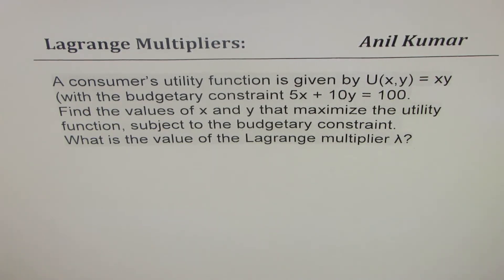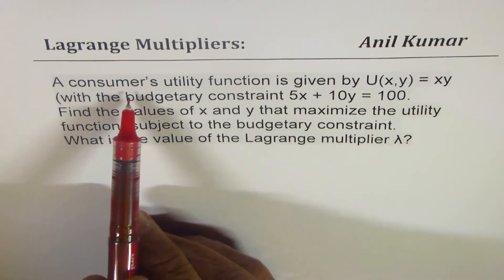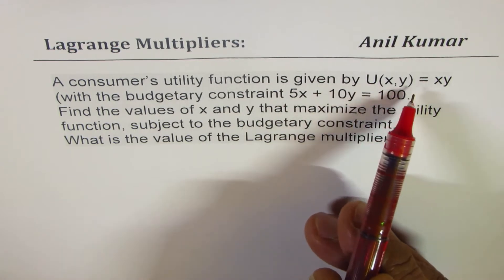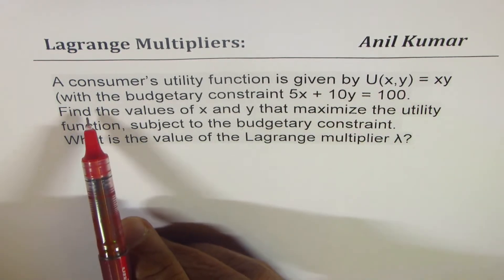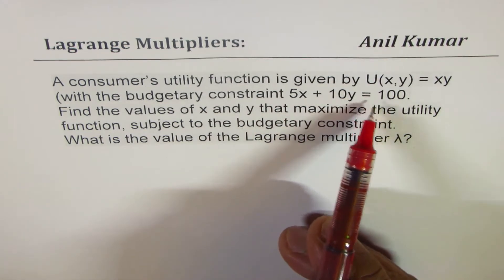So in this particular question, let's go through the question first. The question is, a consumer's utility function is given by U(x,y) equals xy with budgetary constraint 5x plus 10y equals 100.